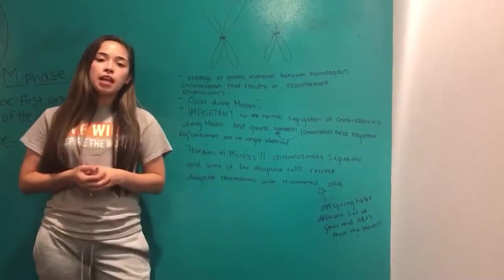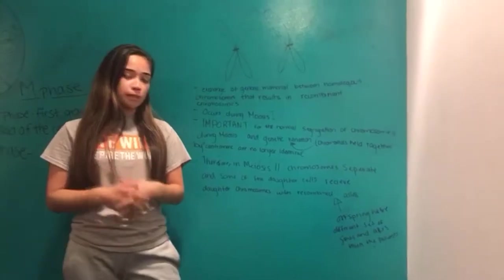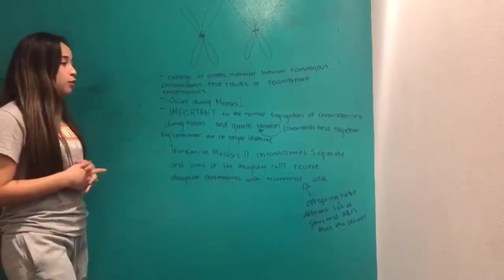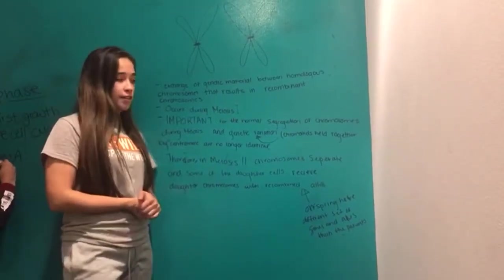So in prophase I, segments of non-sister chromatids break and reattach to the other chromatid. This is very important for the normal segregation of chromosomes during meiosis, and very important for genetic variation.